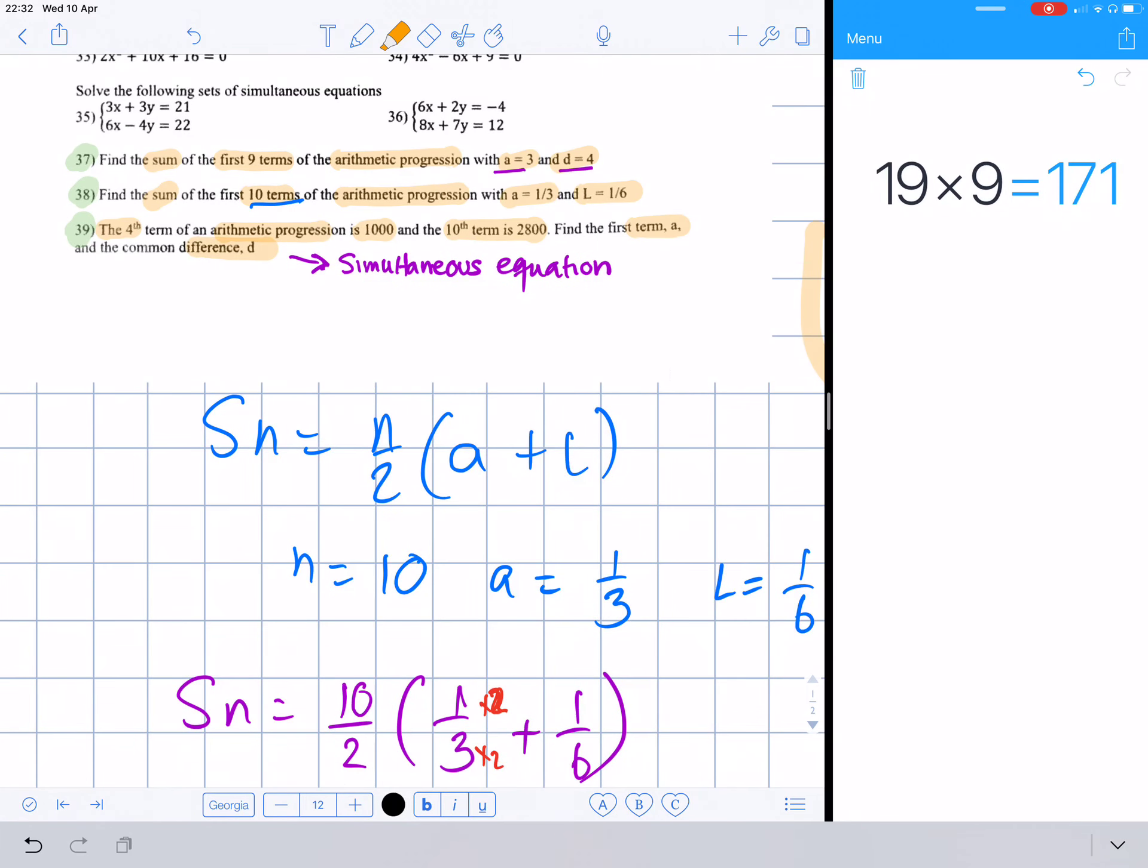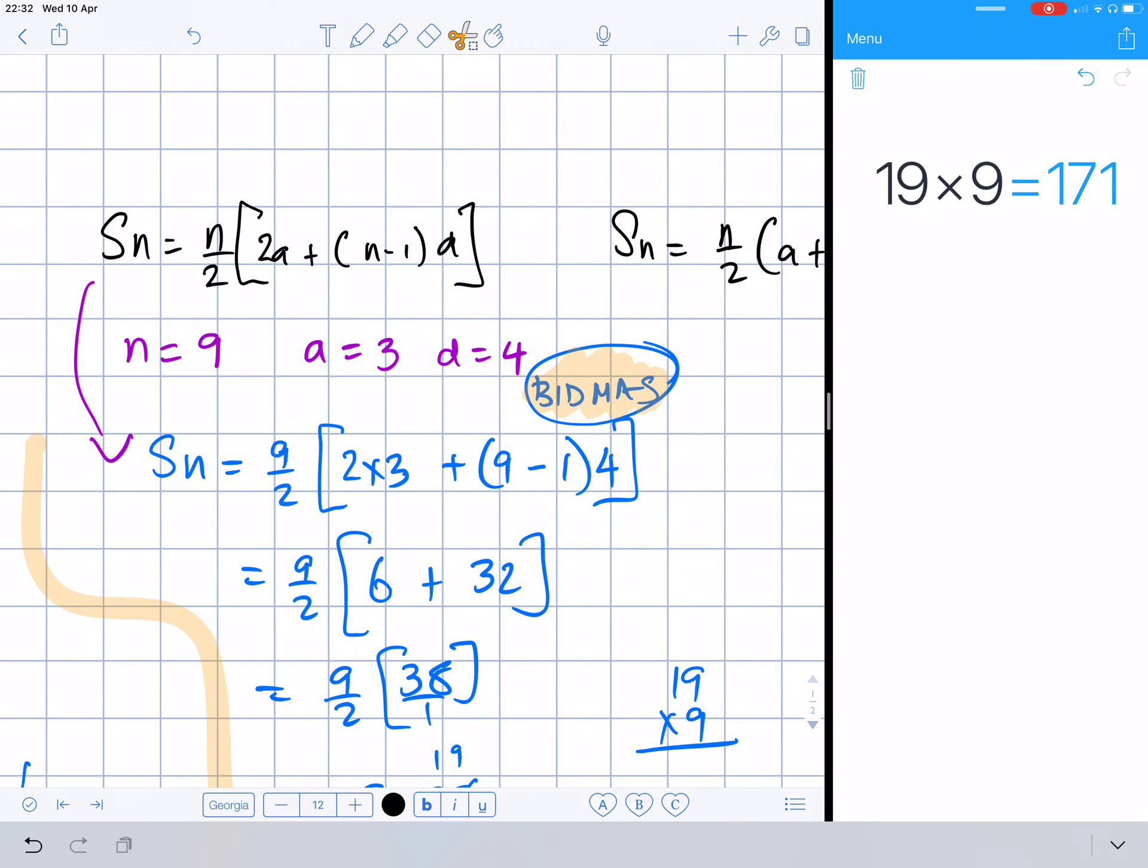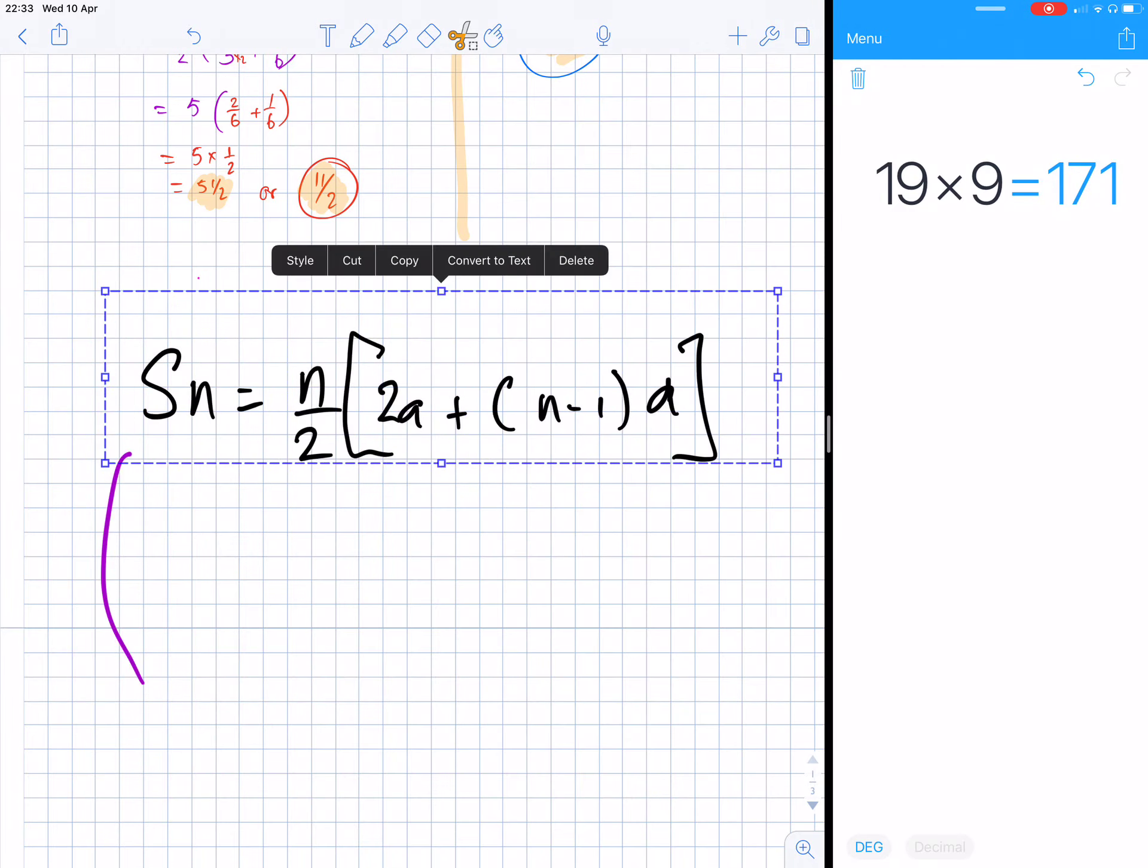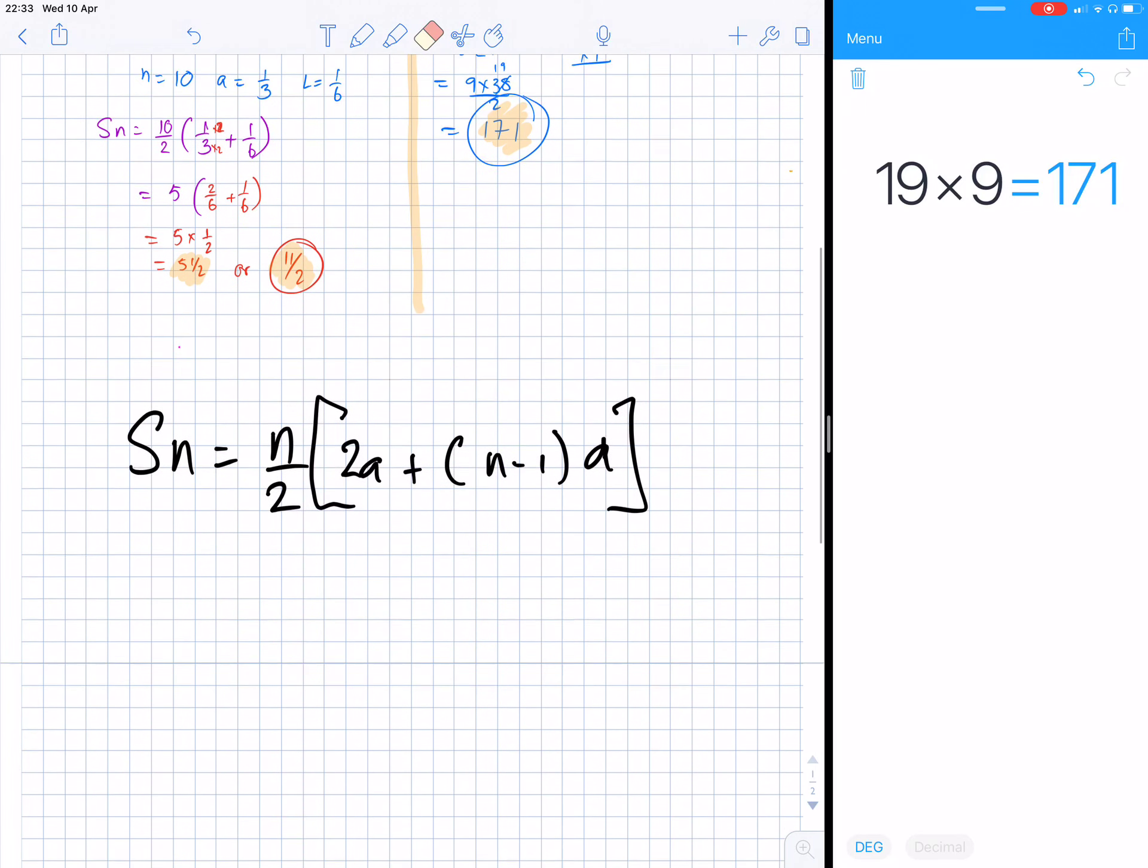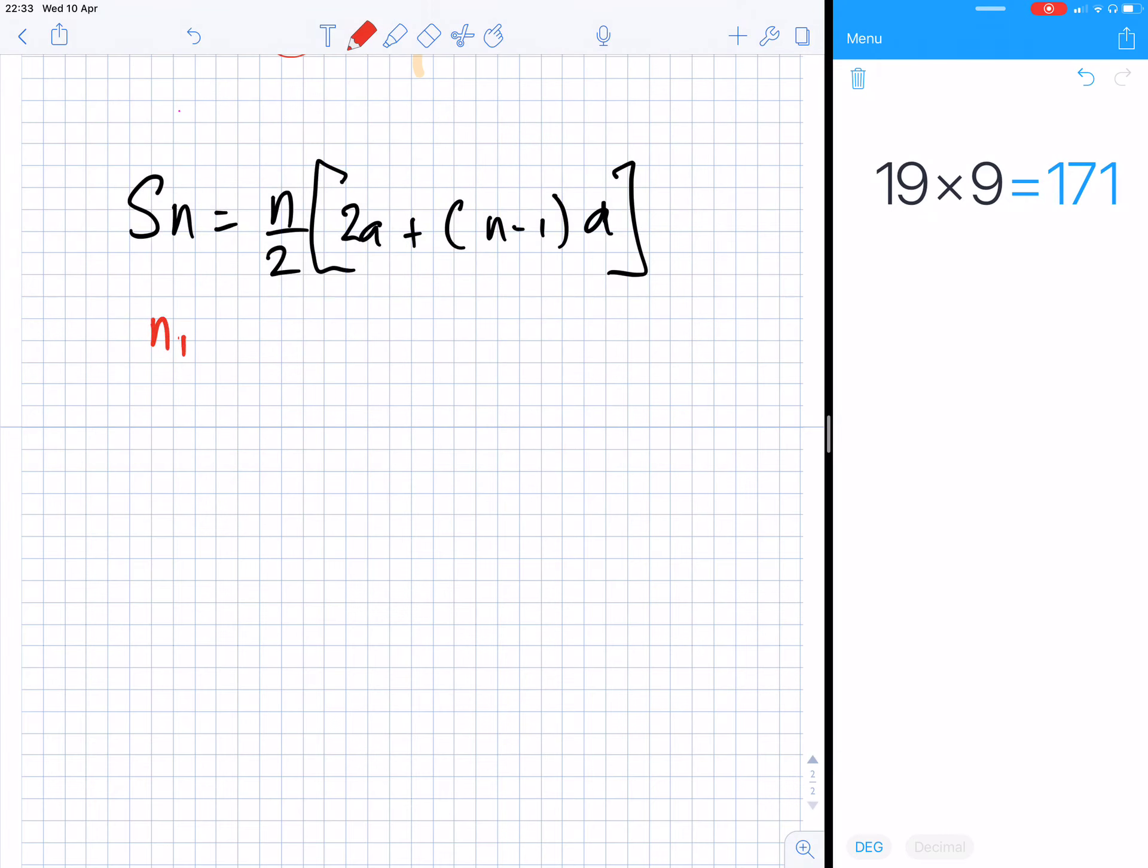Now let's go to this one. For this one, we've got a and d and the n. So I'm going to take this equation, copy it, and place it right here. So first of all we have n1 for the first equation.